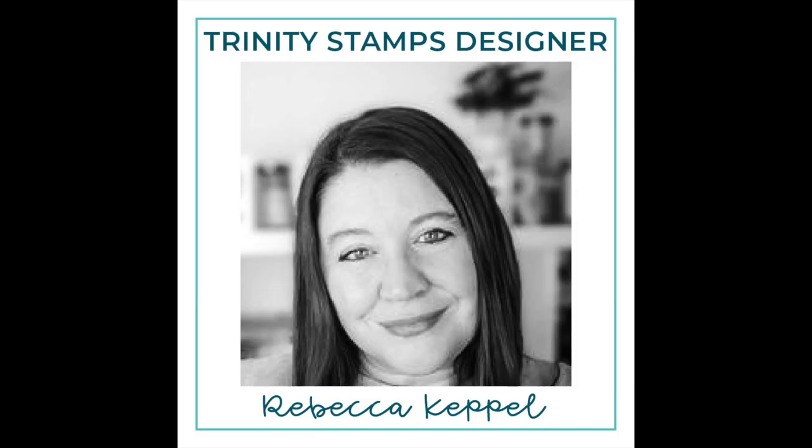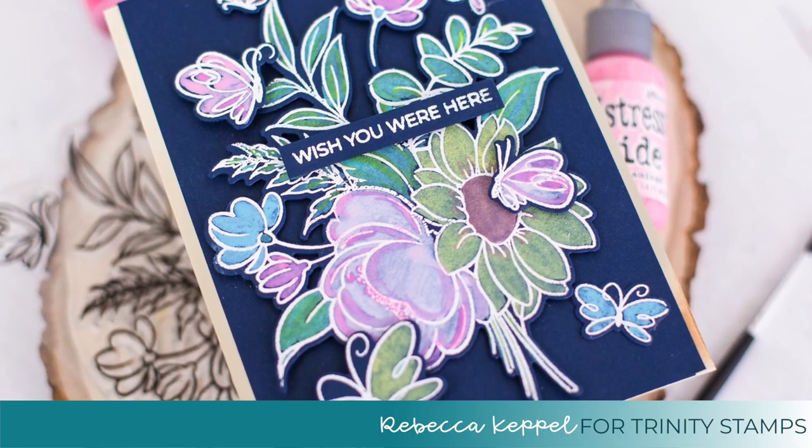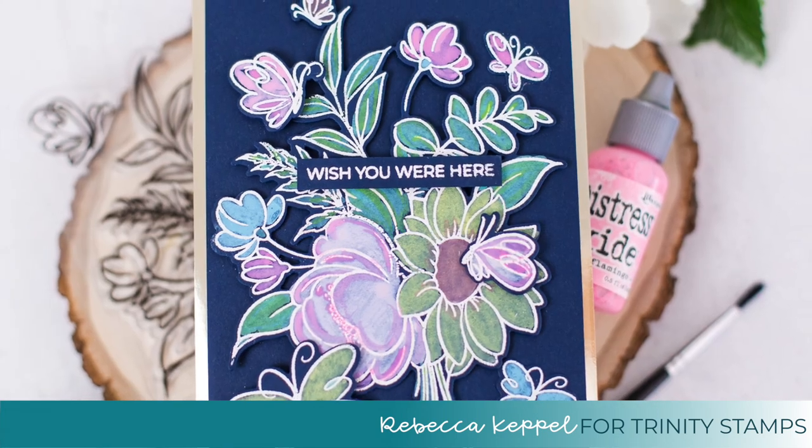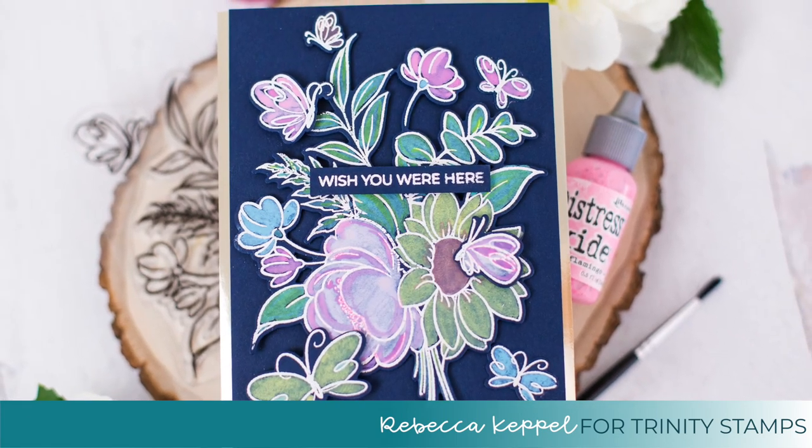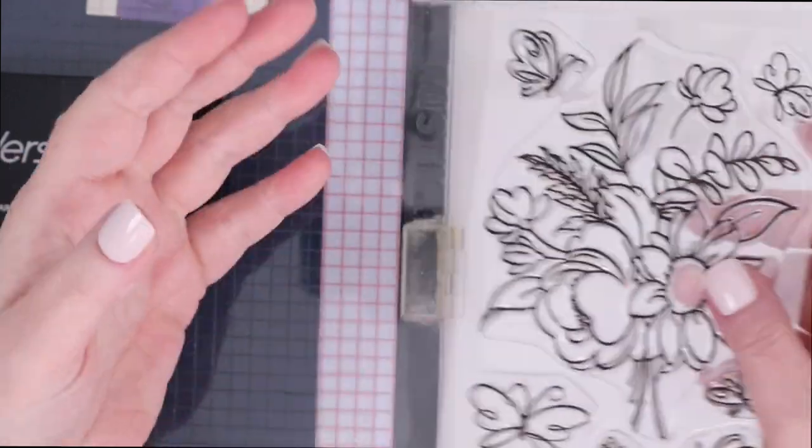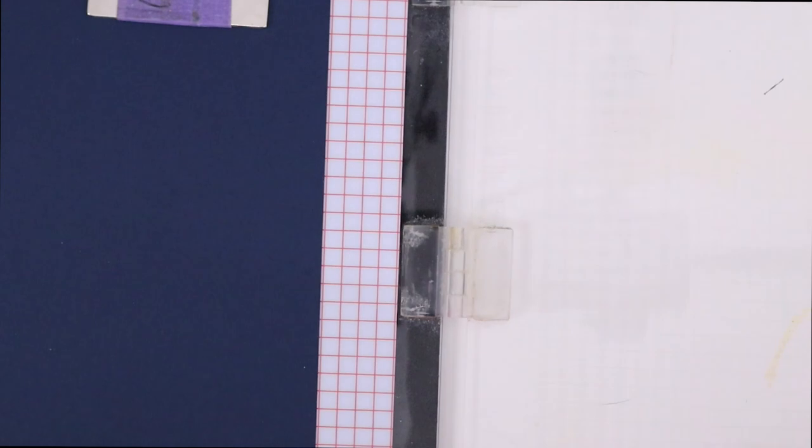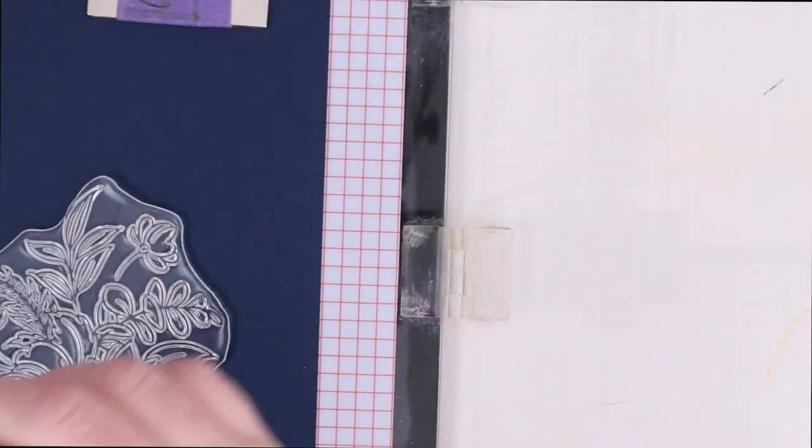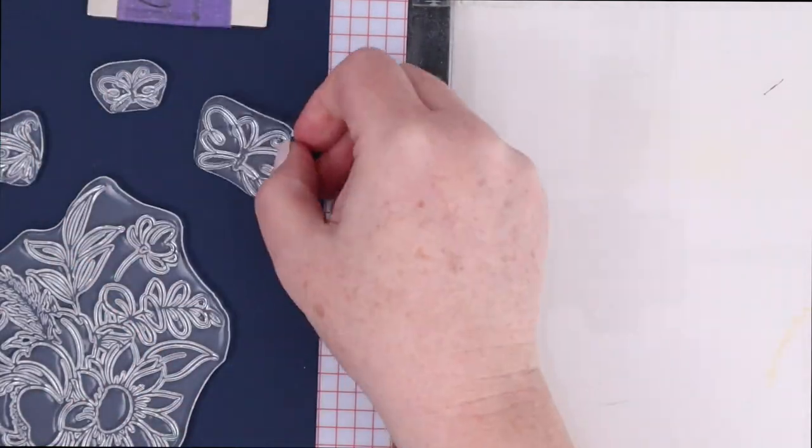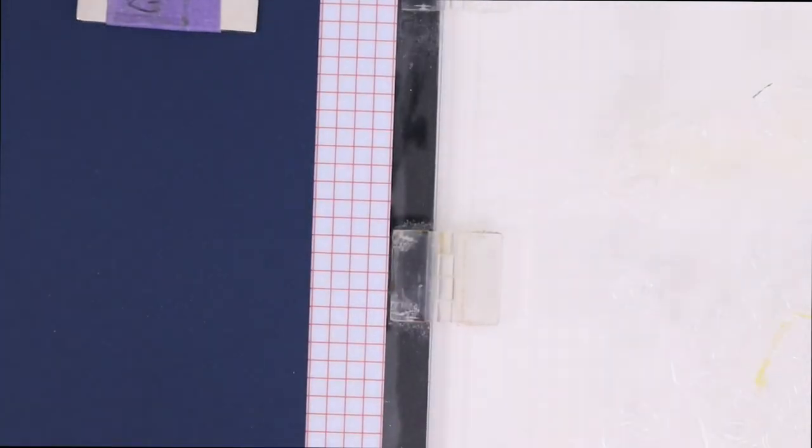Hello everyone, I'm Rebecca Keppel. I am super excited to be back on Trinity Stamps YouTube channel and I have a really fun card to share with you today—painting on dark colored cardstock with distress oxide ink. I'm going to use this stamp set from Trinity Stamps that's called Blooming Bunch, and it's just this really fun bouquet of flowers. There's also some separate stamps of butterflies and I'm going to stamp all of these on a piece of navy cardstock.